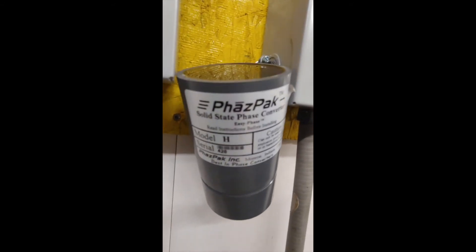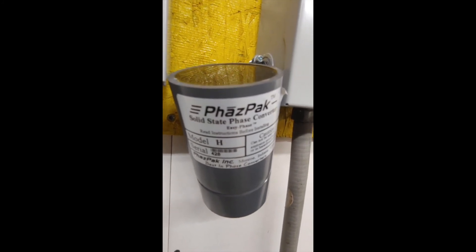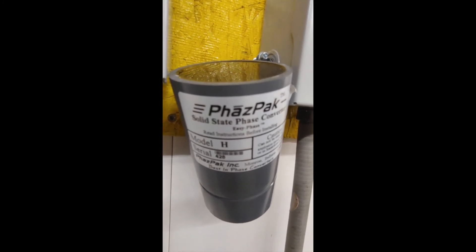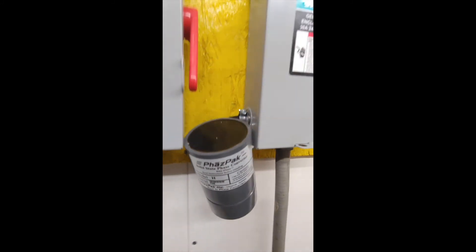So PhazPak. Now go to PhazPak.com. P-h-a-z-p-a-k.com. It's a Model H. This is a 7.5 horsepower, because the motor is a 5 horsepower.